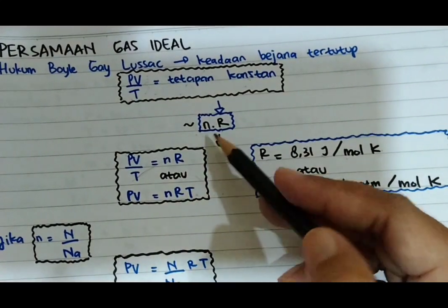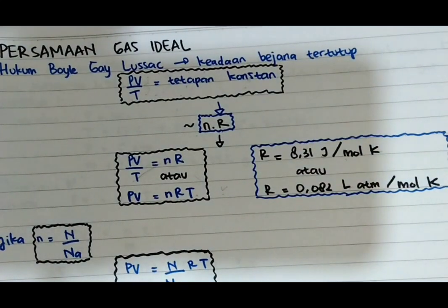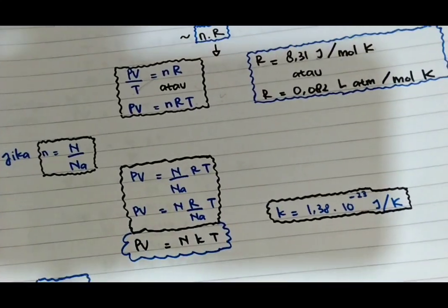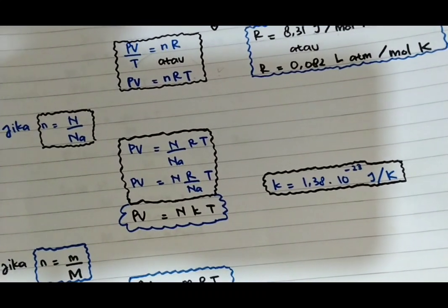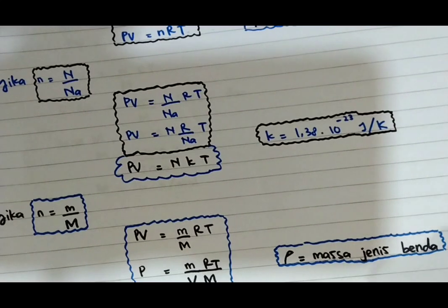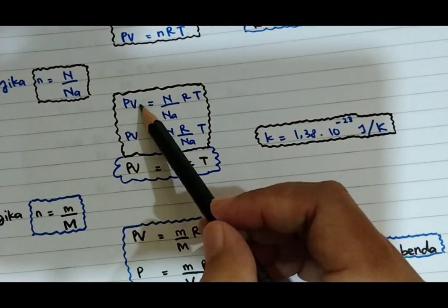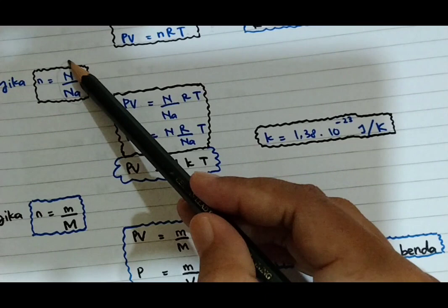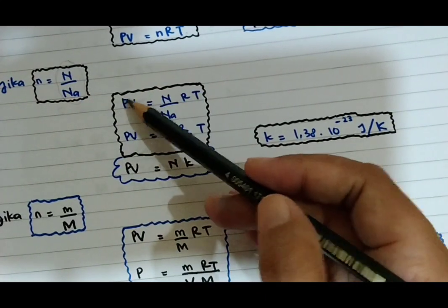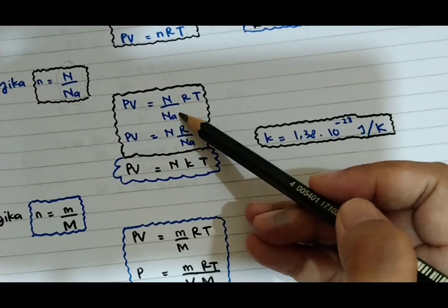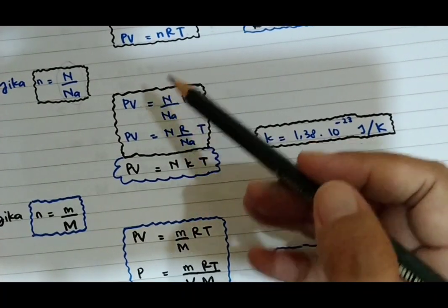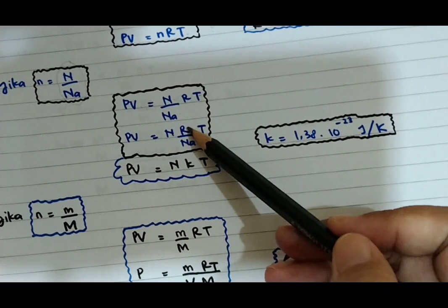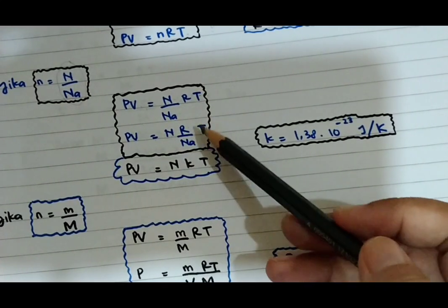Dari turunan rumus PV/T, ternyata jumlah mol tersebut juga setara dengan bilangan atom dibagi dengan bilangan Avogadro. Jadi PV = NRT, di mana N juga setara dengan N dibagi N_A. Maka kita bisa masukkan menjadi PV sama dengan (N/N_A) × R × T, yang kemudian menjadi PV sama dengan N × (R/N_A) × T.